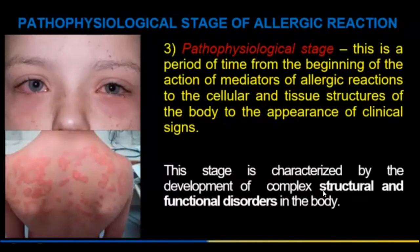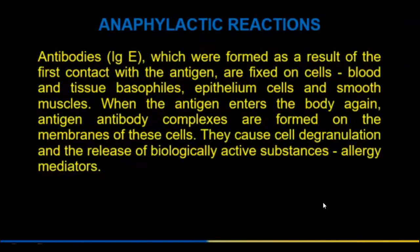Regarding the anaphylactic reaction: antibodies — immunoglobulin E — formed as a result of first contact with the antigen, are fixed on blood and tissue basophils, epithelium cells, and smooth muscle. When the antigen enters the body again, antigen-antibody complexes are formed on the membranes of these cells, causing cell degranulation and release of biologically active substances — mediators of allergy.